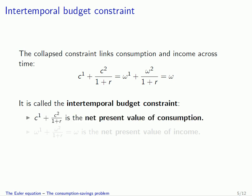Because it links consumption and income across time, this collapsed constraint is called the intertemporal budget constraint. On the left-hand side we have the net present value of consumption — all consumption in both periods, with second-period consumption discounted by (1+R). On the right-hand side, omega 1 plus omega 2 divided by (1+R) is equivalently the net present value of income.